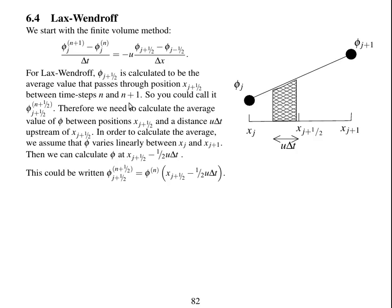So we need to calculate the average value of phi between positions xj+1/2 here, and a distance u delta t upstream. So the average value of phi in this region.